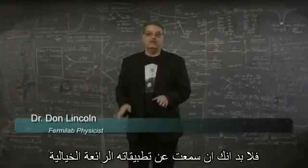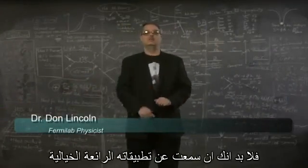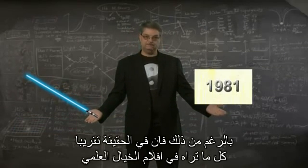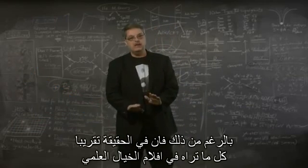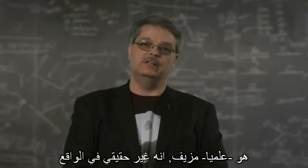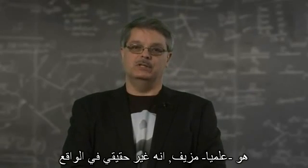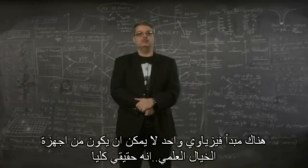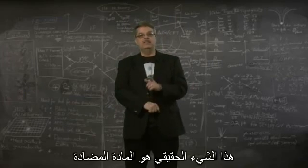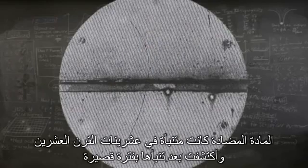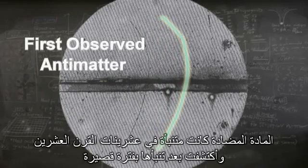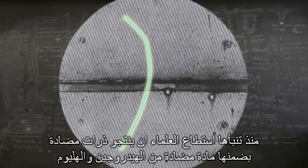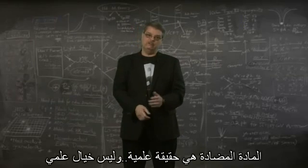Even if you're not a science fiction fan, you can't help but hear about all sorts of cool kinds of imaginary gadgets, from lightsabers to time travel. However, the reality is that almost everything you see in science fiction movies is, scientifically speaking, actually really pretty bogus. They're not real. But I have some good news. There's one physics concept in the pantheon of great science fiction plot devices that is totally real. This physically real thing is antimatter. Antimatter was predicted in the 1920s and discovered shortly thereafter. Since its discovery, scientists have been able to make anti-atoms, including antimatter hydrogen and helium. Antimatter is science fact, not fiction.